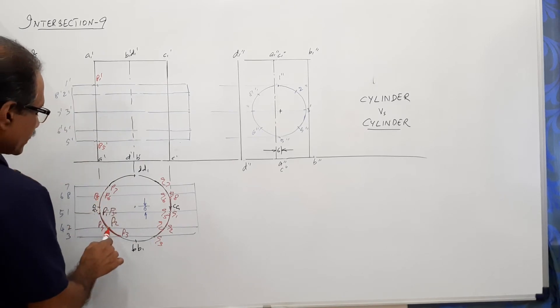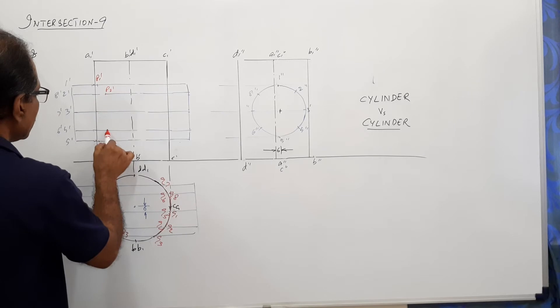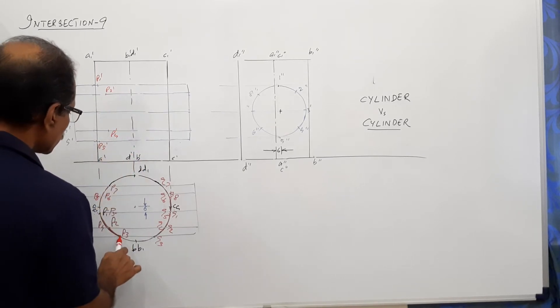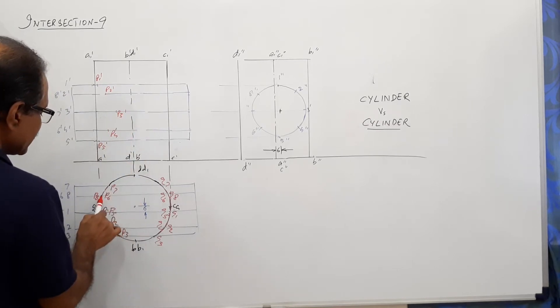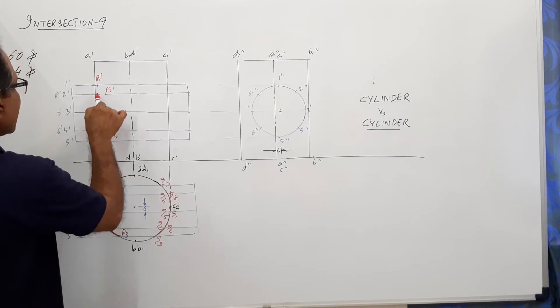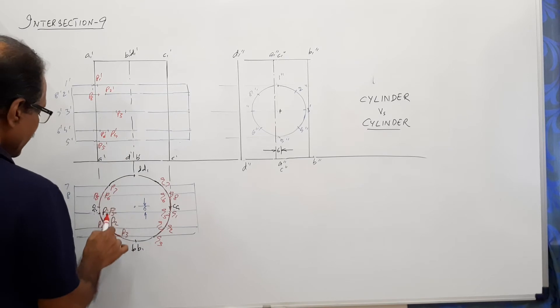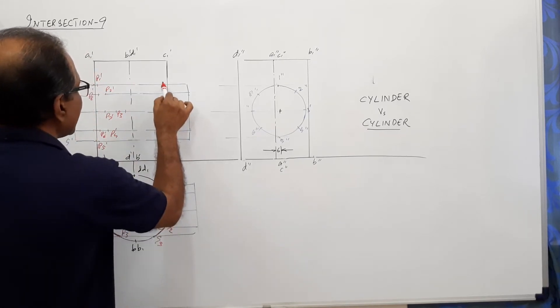P1 dash, P5 dash. Projector through P2 will give you somewhere here, P2 dash as well as P4 dash. Projector through P3 will give you P3 dash. Projector through P6 and P8 will be slightly available. P6 dash and P8 dash. Projector through P7 will give you P7 dash. Similar argument when you project from this side.